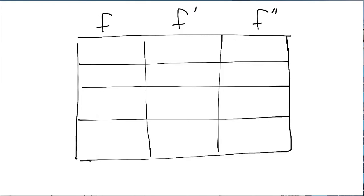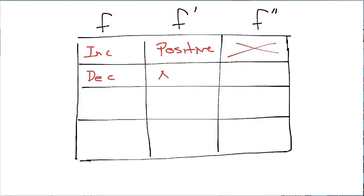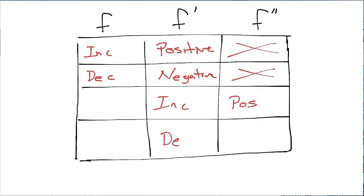So if I label the chart, and I know this is increasing, then F prime would be positive. If this is decreasing, F prime is negative. If F prime is increasing, F double prime is positive. If F prime is decreasing, we know F double prime is negative.